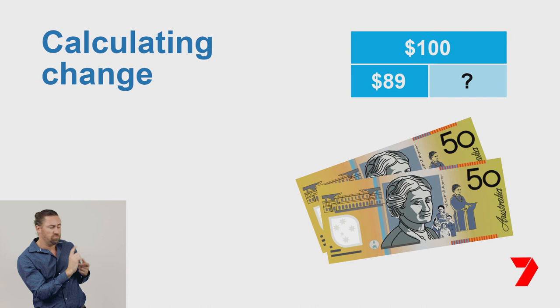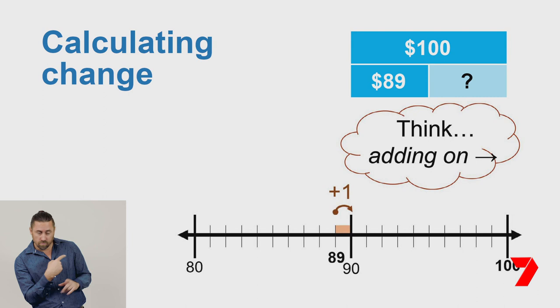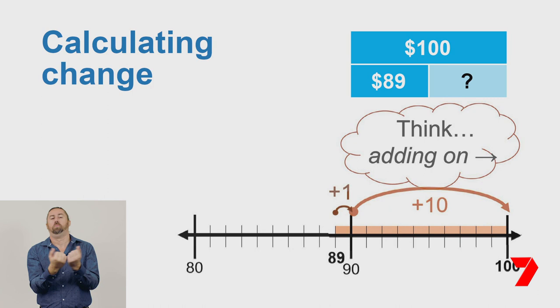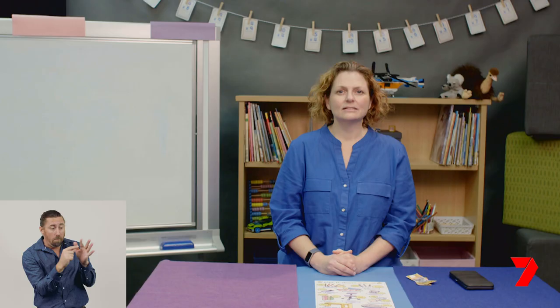So to calculate the change, we're going to add on from 89 using the number line. Adding one gets to 90. Then adding 10 more gets to 100. So 1 add 10 is 11. We've found the missing part is 11. So when I buy the $89 chair with $100, I will get $11 change.